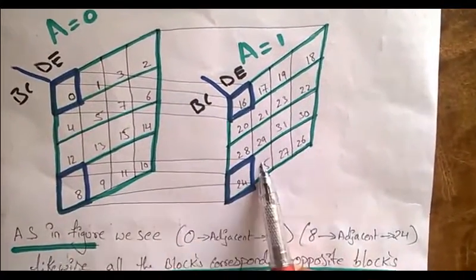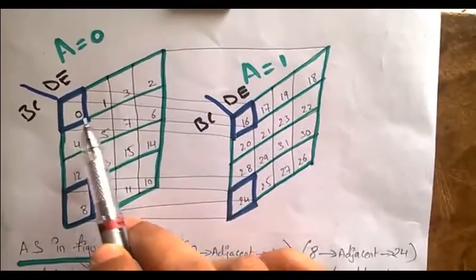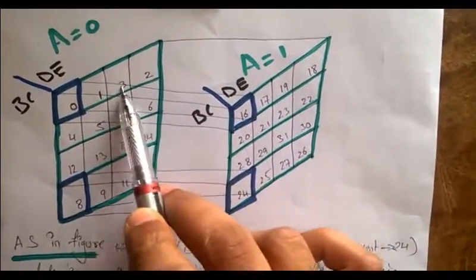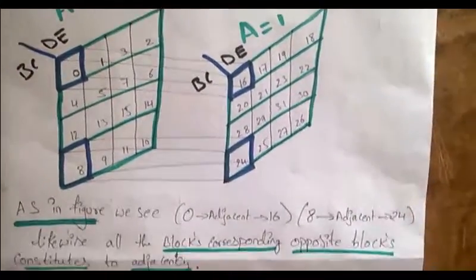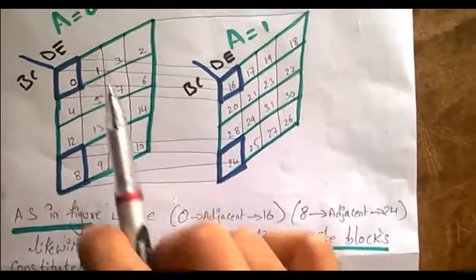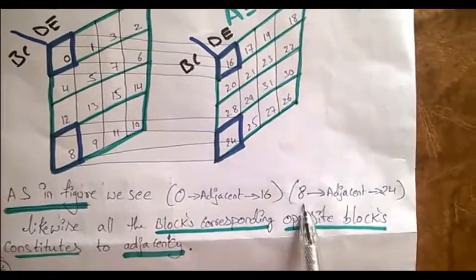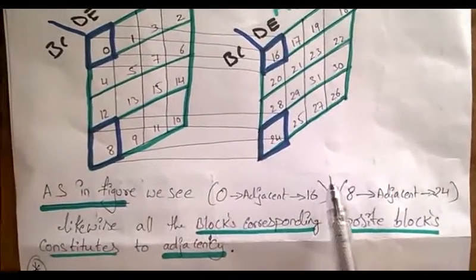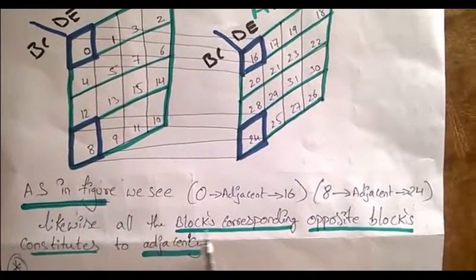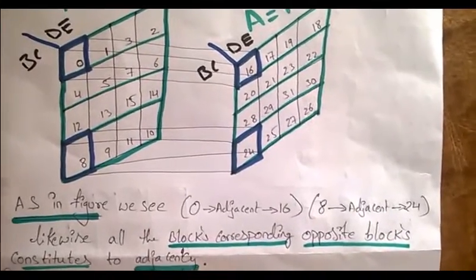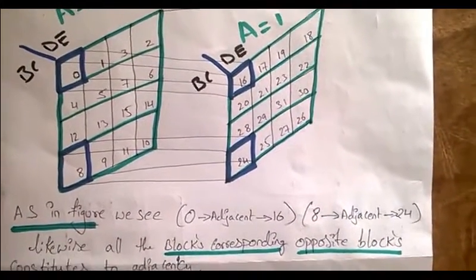In the 5-variable it looks like a 3D figure, so these are adjacent: 9 and 25, 8 and 24, 0 and 16, 1 and 17, 3 and 19. See, as in the figure we see 0 and 16 are adjacent, 8 and 24 are adjacent. Likewise, all blocks corresponding to opposite blocks constitute adjacency. The looping is done to adjacent blocks.